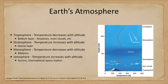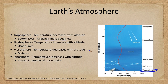Now let's move on and look at Earth's atmosphere. Here we see a sketch of the atmosphere. The layer we're most familiar with is the troposphere — the bottom layer, where airplanes and most of the clouds are. During this region, the temperature decreases as you move higher up; the temperature gets colder and colder with altitude.